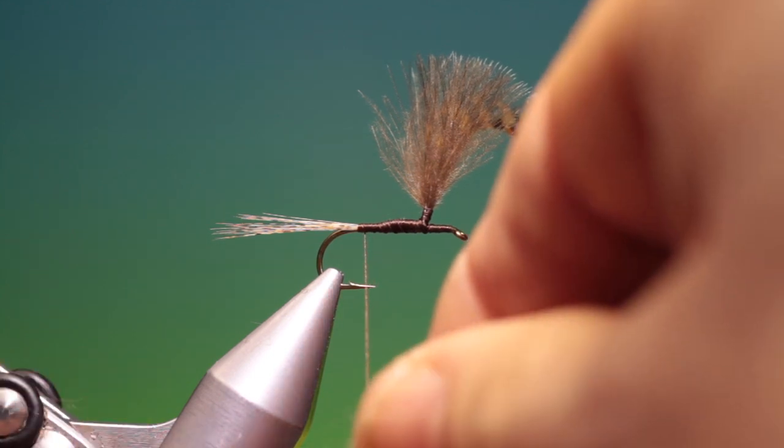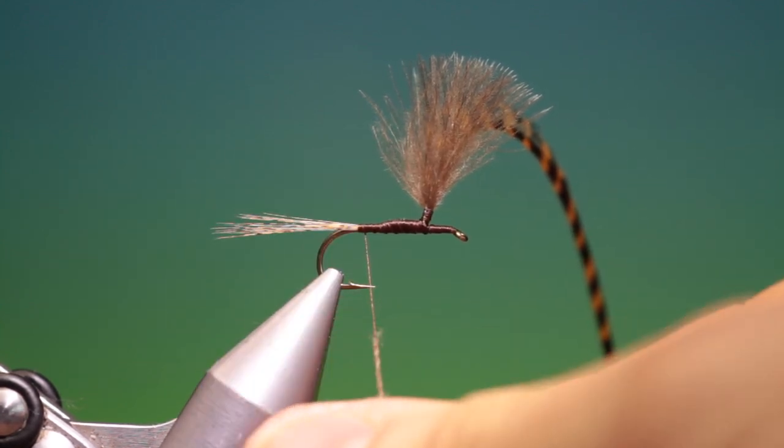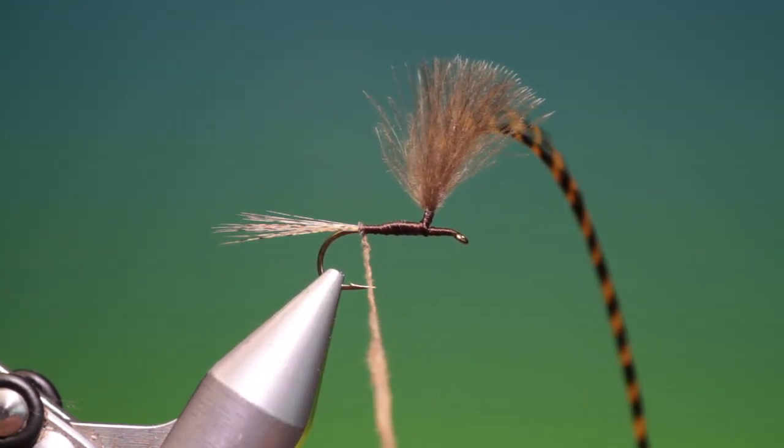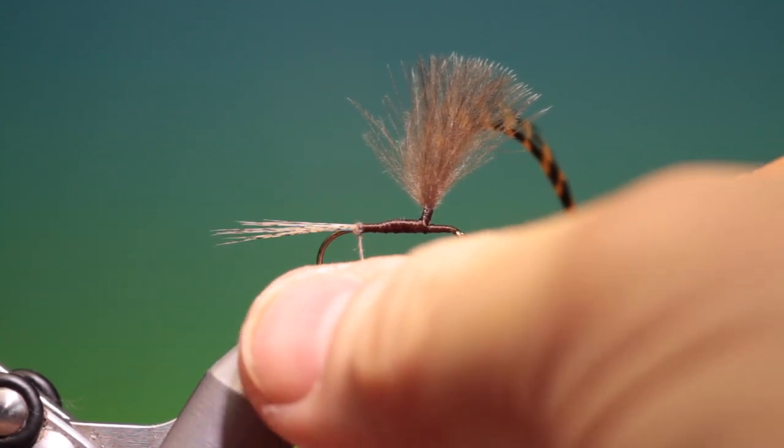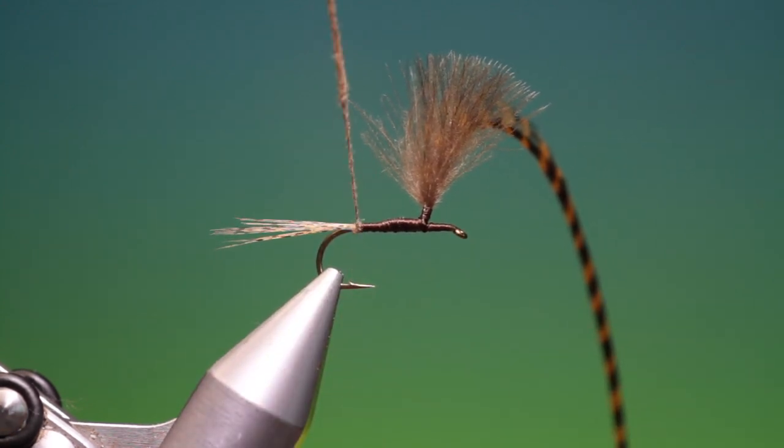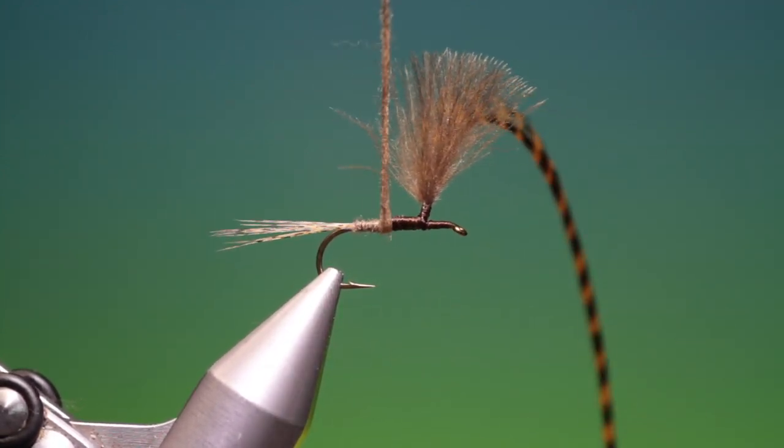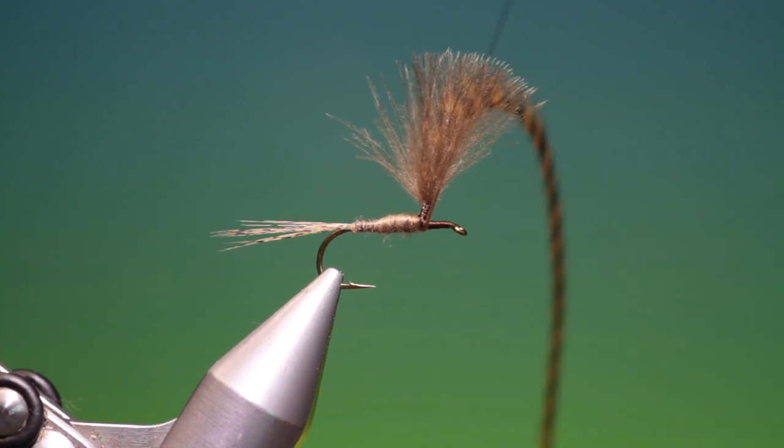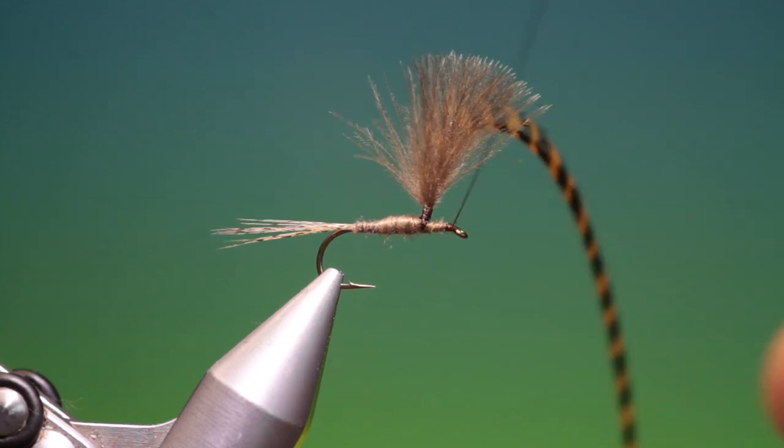We just take a little dark tan dubbing, super fine, put that in there, and we catch it in like so. Then we can tighten all that up and go forward. We only want a fine body here.